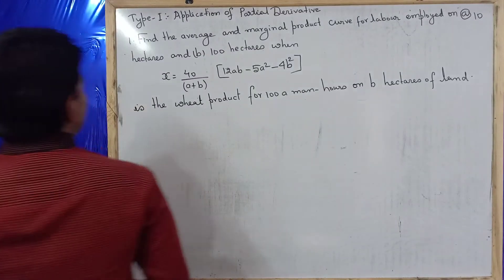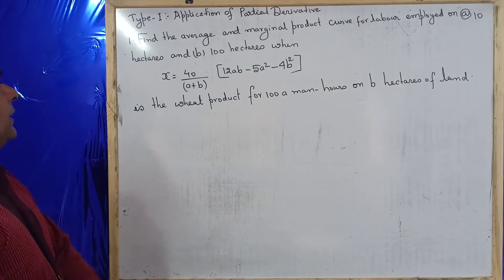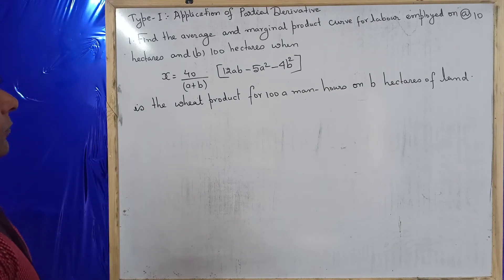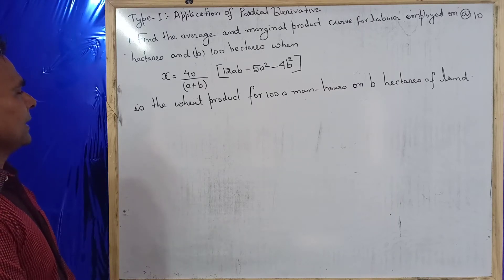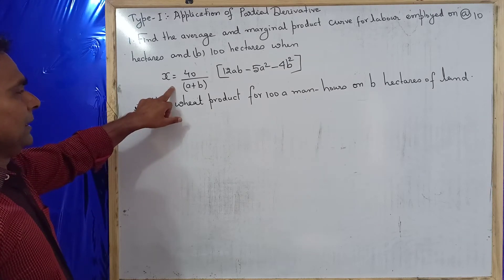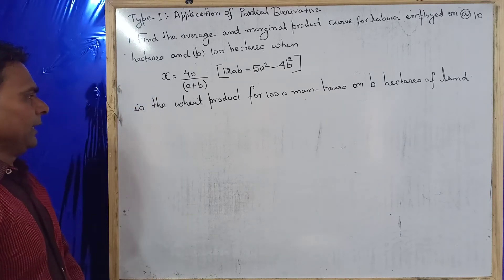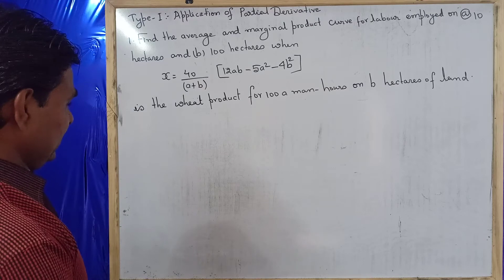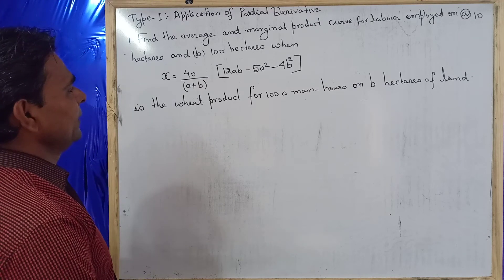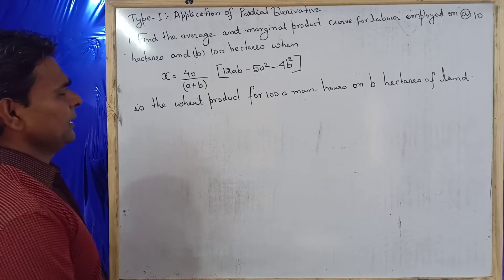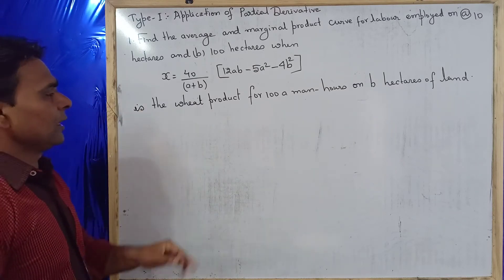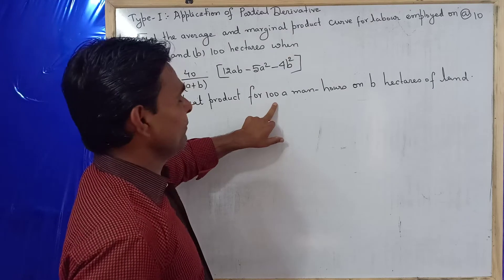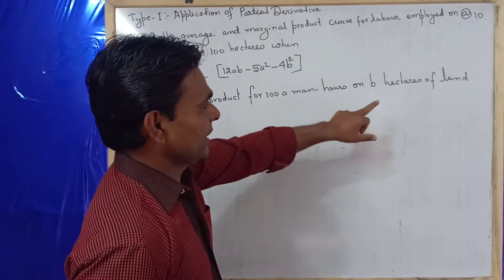The question is: Find the average and marginal product curve for labour implied on A = 10 hectare and B = 100 hectare, when X equals the production function 40/(A+B) times (12AB minus 5A squared minus 4B squared), which is the weekly product for 100 A man-hours on B hectares of land.